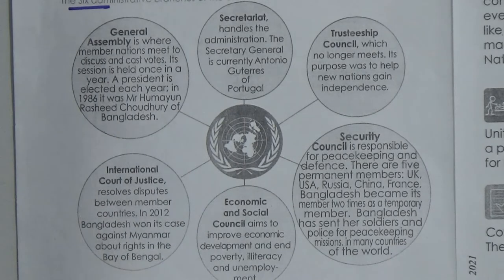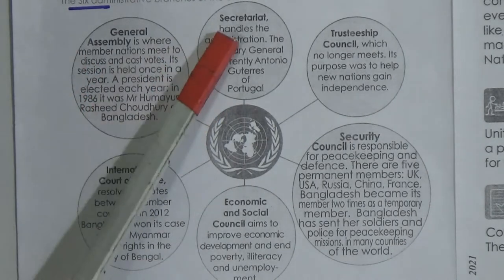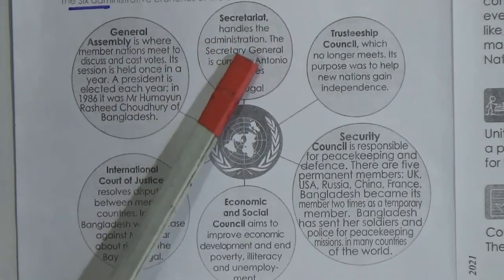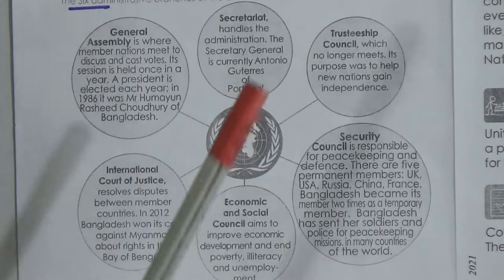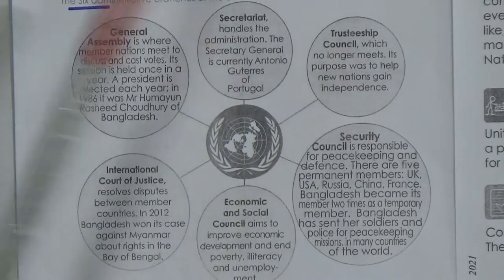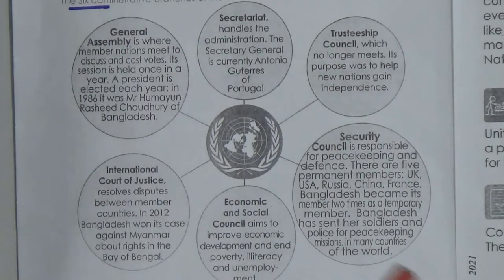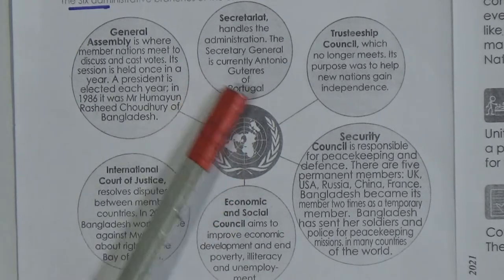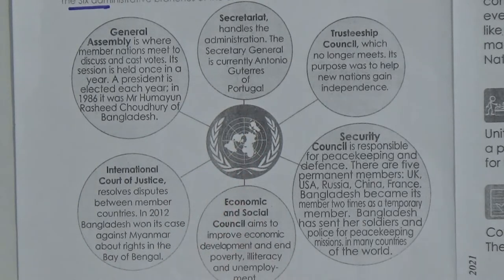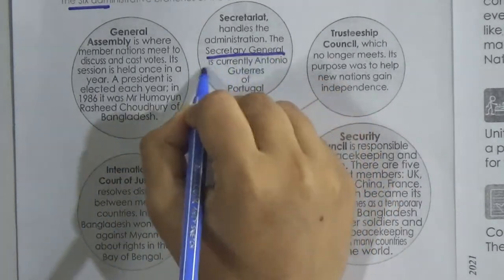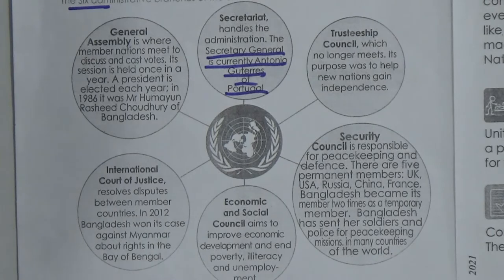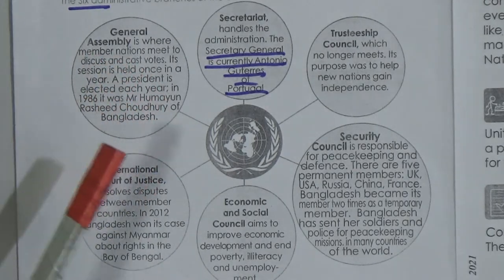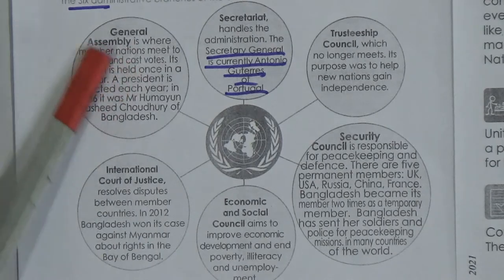The six administrative branches are: Secretariat, General Assembly, International Court of Justice, Economic and Social Council, Security Council, and Trusteeship Council. The Secretariat handles the administration. The main headquarters of the United Nations is in New York City, in the United States of America. The Secretary General is currently António Guterres of Portugal.